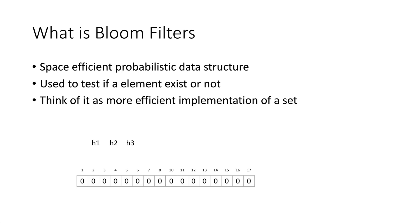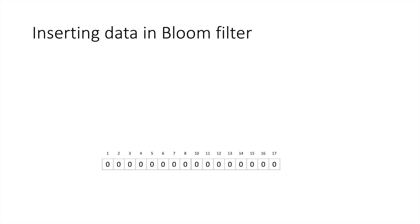To implement a bloom filter we need a bit array and hash functions. Let us suppose we have three hash functions: h1, h2, and h3. We have a bit array and in the beginning all the bits of that array are set to zero. We will use these three hash functions h1, h2, and h3 throughout the implementation.